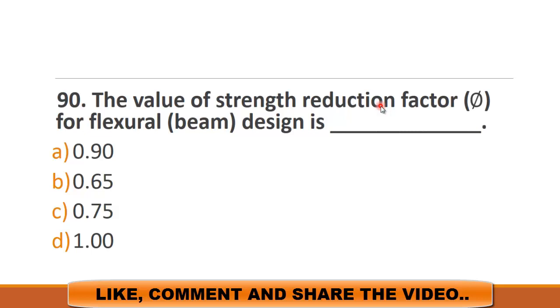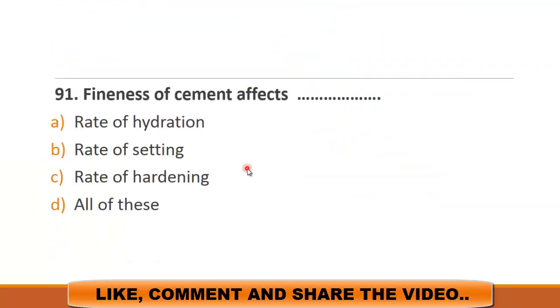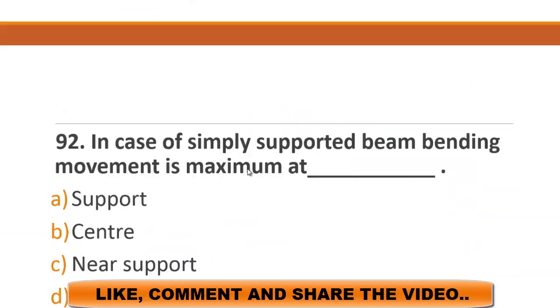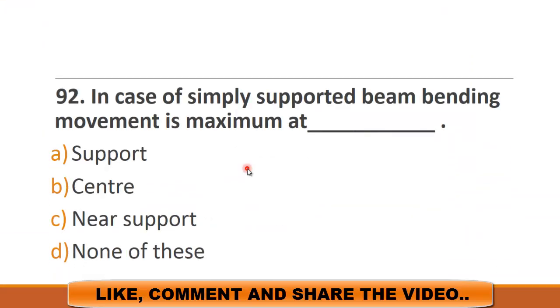MCQ number 91 is: fineness of cement affects. The choices are a) rate of oxidation, b) rate of hydration. It is known that fineness of cement affects rate of hydration.